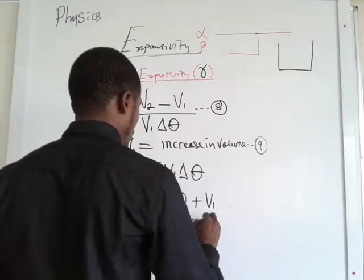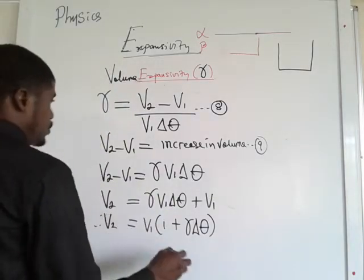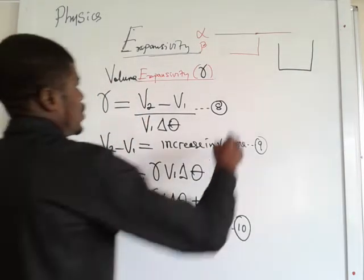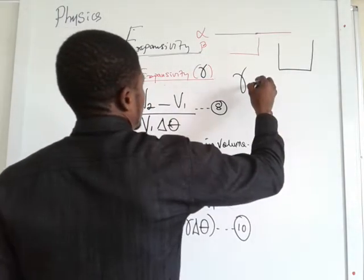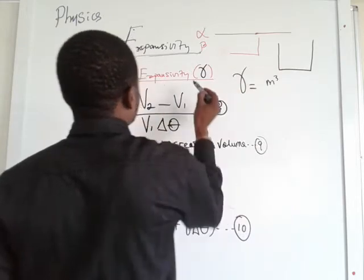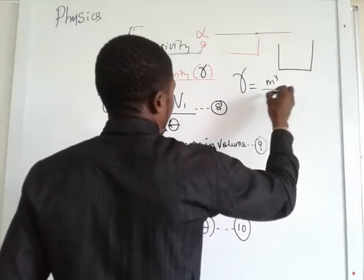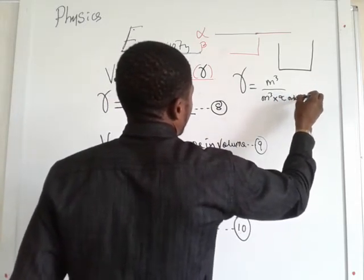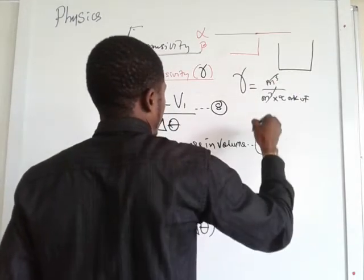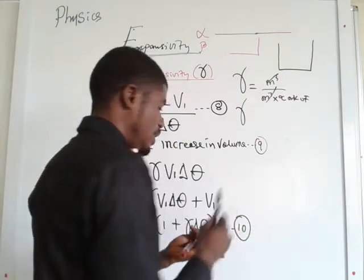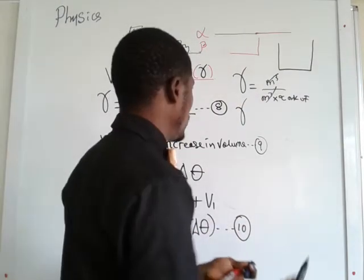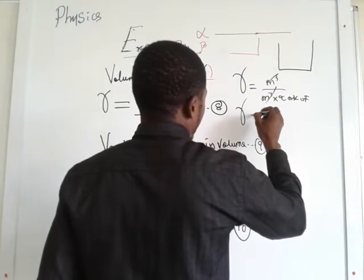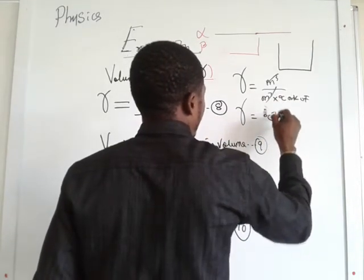Factoring out V1, we get V2 equals V1 times (1 plus gamma times change in temperature). The SI unit for volume expansivity is also per degree Celsius or per Kelvin — the same as for linear and area expansivity.